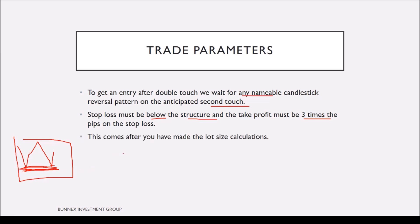This comes after you have made your lot size calculations. Stop loss levels are going to be variable from trade to trade, therefore you need to calculate your stop loss for each and every trade you take, so as to be consistent in the amount you are risking. Your stop losses should be the same throughout your trading statement. Now let's go over the charts and look at some examples.